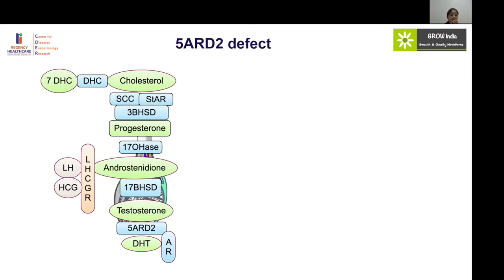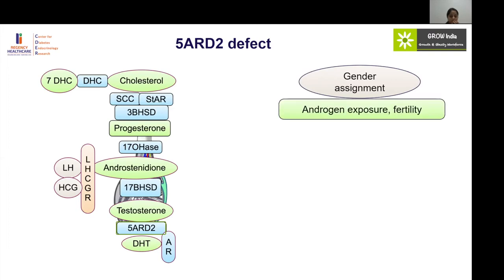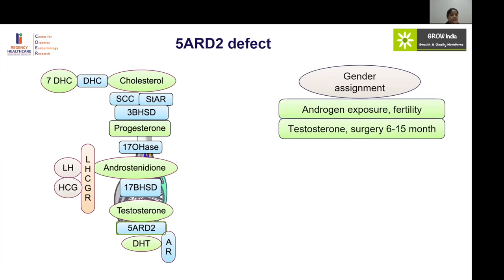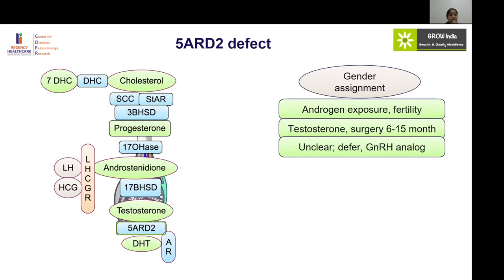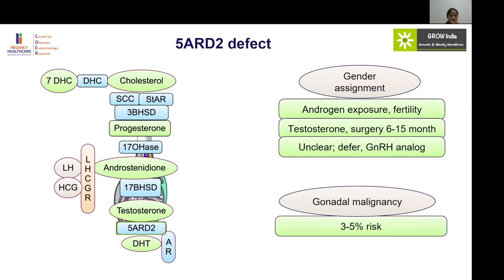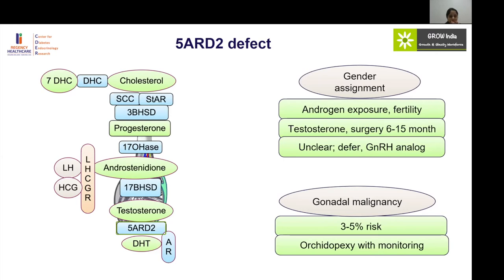In 5-alpha-reductase 2 deficiency, testosterone is present in antenatal life — so these patients are exposed to androgens in the antenatal period and have some virilization. The gender of rearing is mostly male; testosterone injections can be given in infancy with corrective surgeries at 6 to 18 months. If gender is unclear and the child is very under-virilized, surgery can be deferred using GnRH analogues. The risk of malignancy is very low, around 3 to 5 percent, so orchidopexy with frequent monitoring is appropriate.